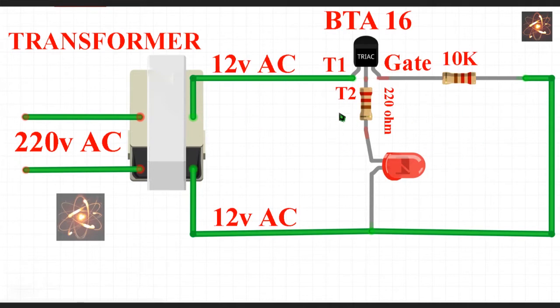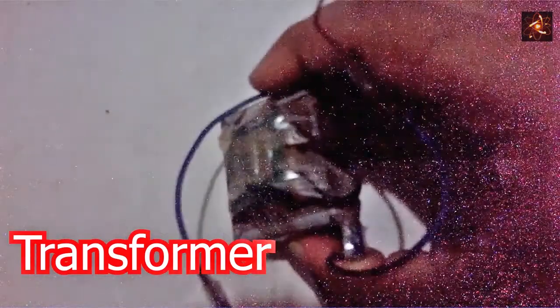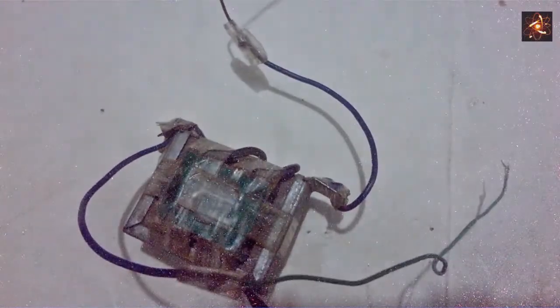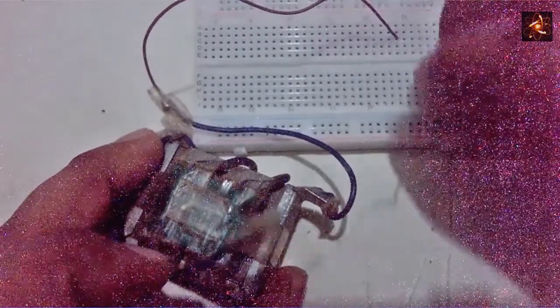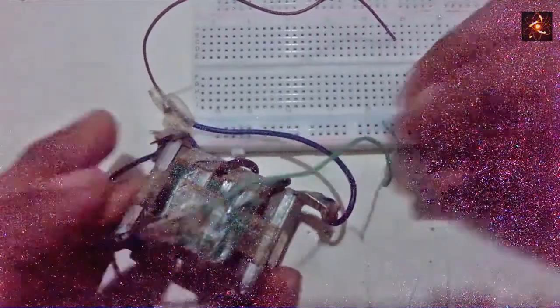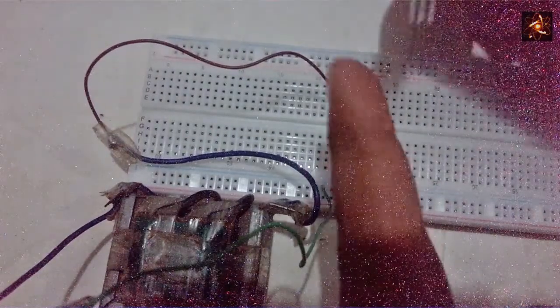So this is the circuit diagram. Let's see the breadboard connection. Now connecting both of the transformer pins in the breadboard. As I am working with AC, there is no polarity.